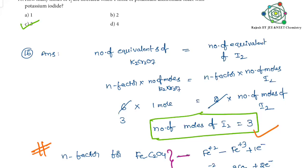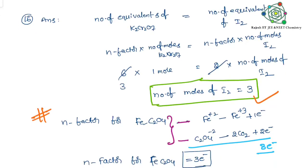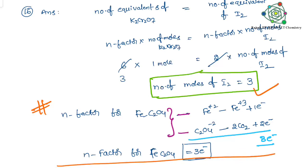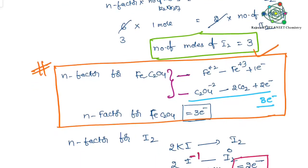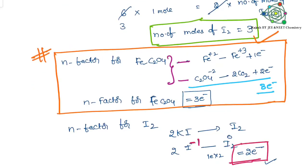Now just you see here, n-factor for FeC2O4. Here Fe+2 will be converted into Fe+3, it lost 1 electron. C2O4-2 is converted into 2CO2 and it lost 2 electrons. Total 3 electrons lost. So therefore n-factor for FeC2O4 is 3 electrons.